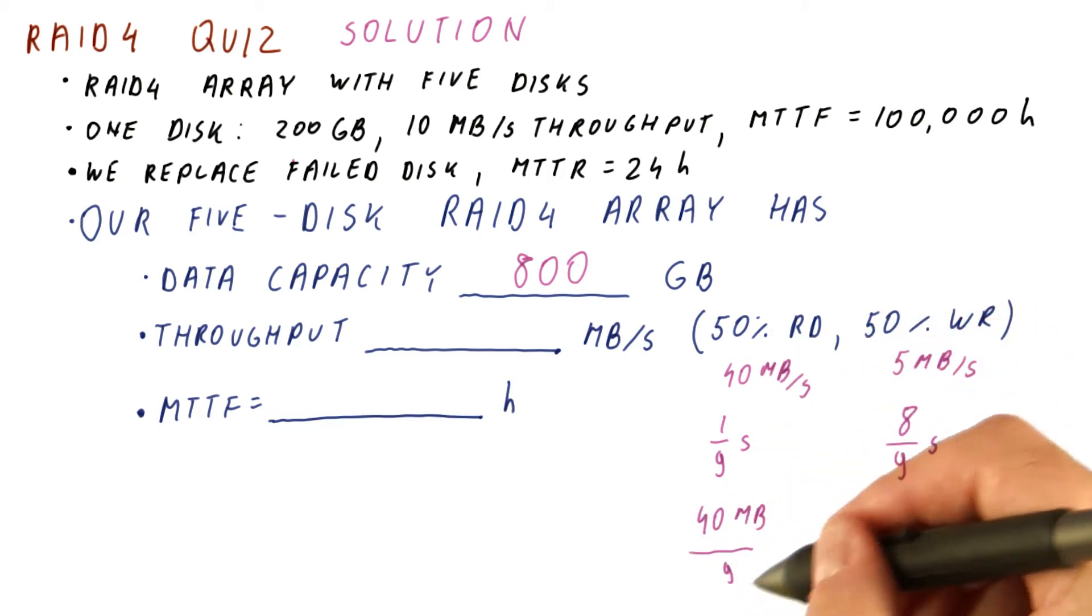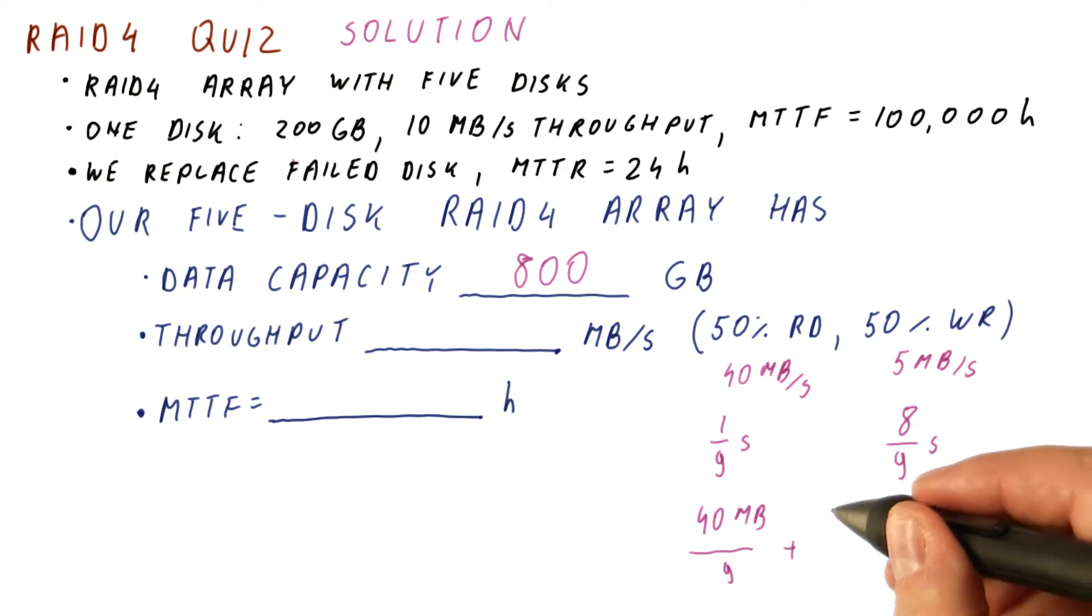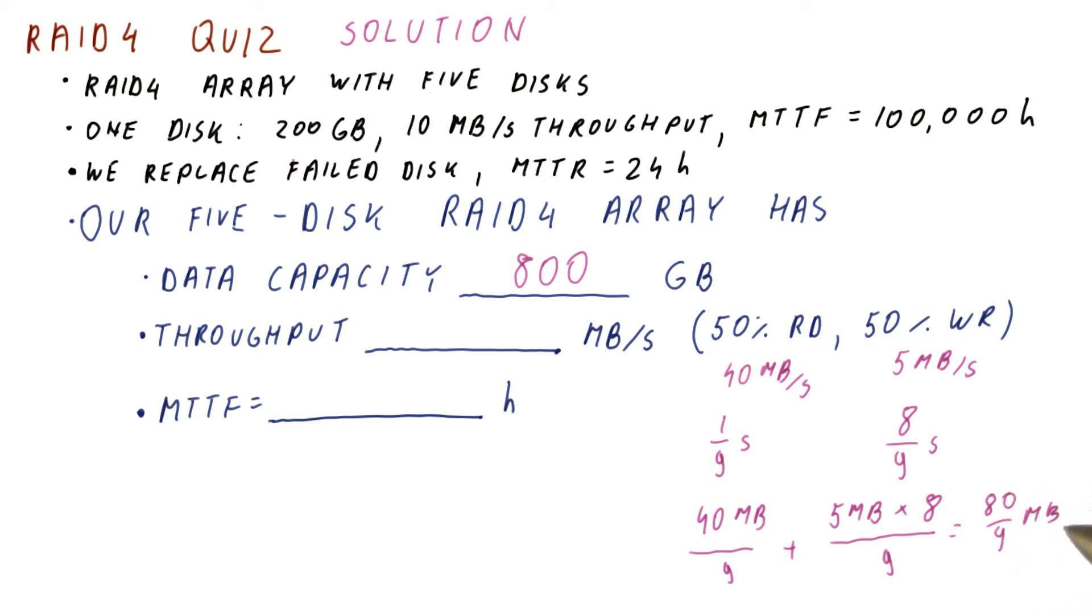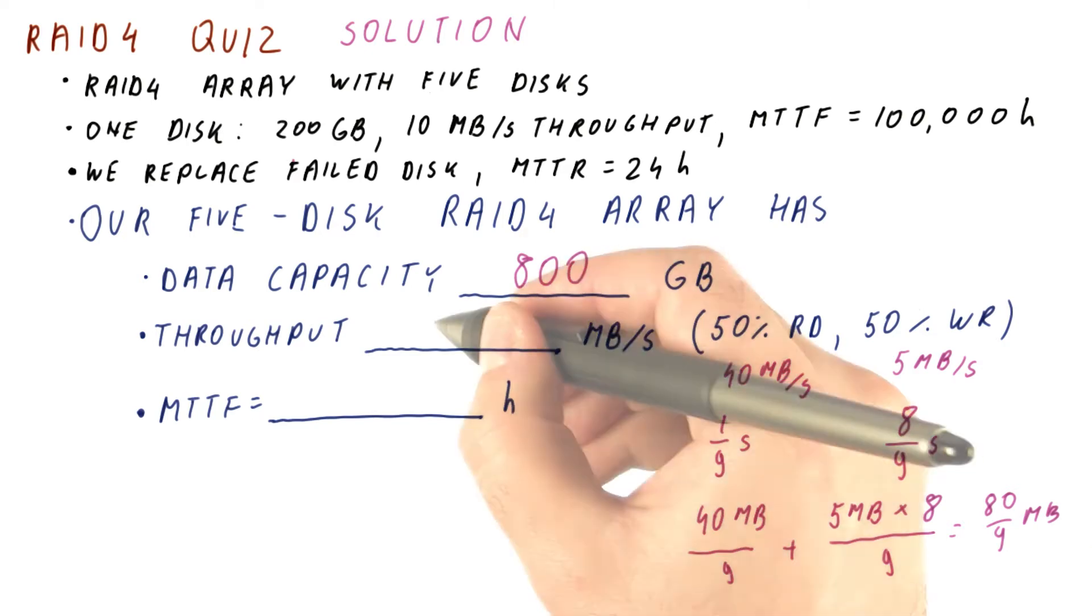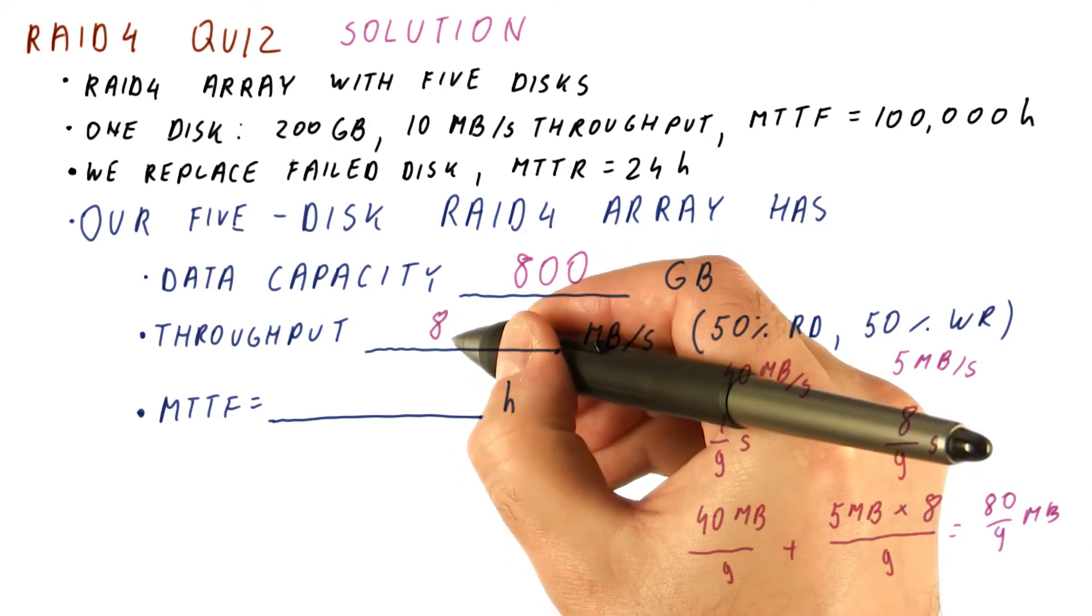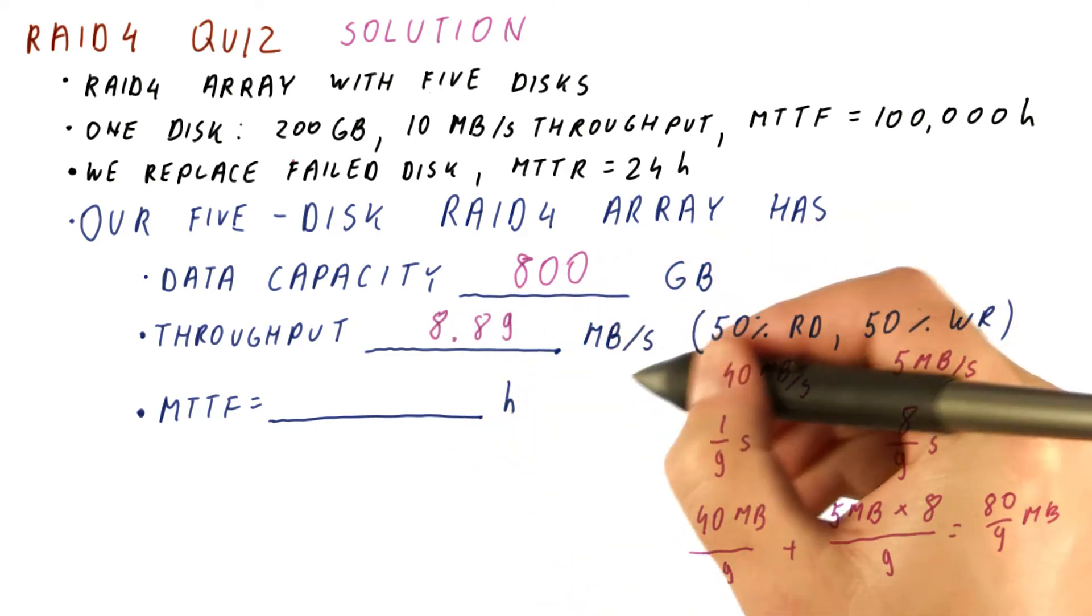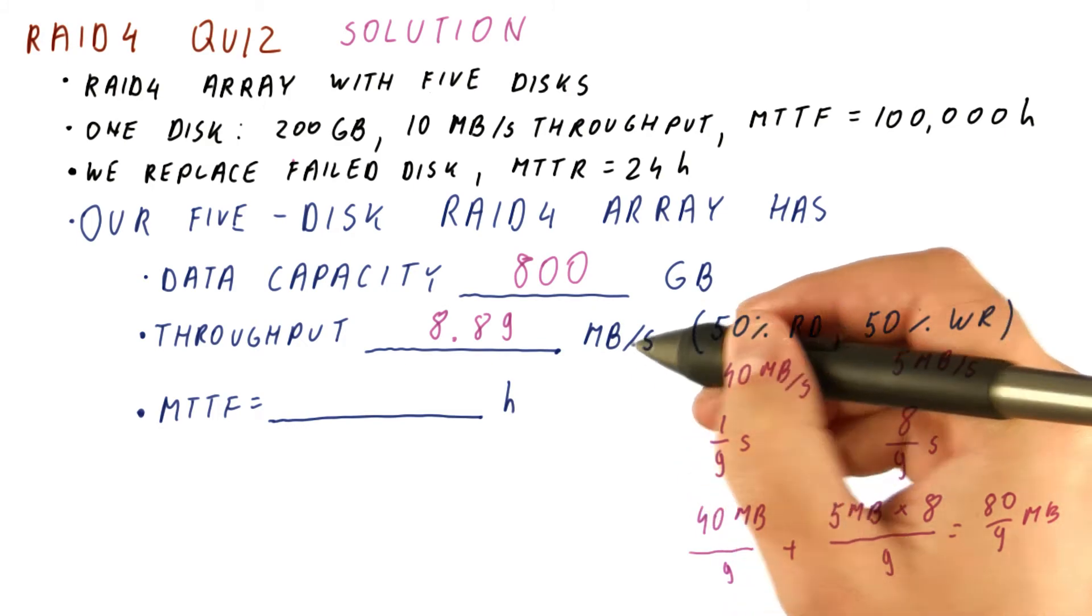So now the overall throughput will be what we can read in one ninth of a second, plus what we can write in eight ninths of a second. And that ends up being 80 over nine megabytes. So this is what we can do in a second. So our average throughput ends up being 8.89 megabytes per second.